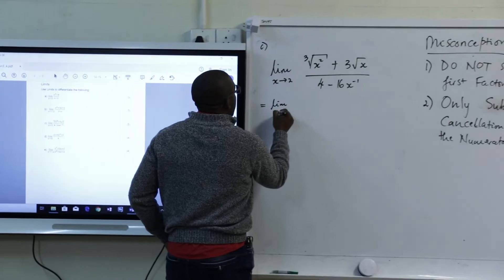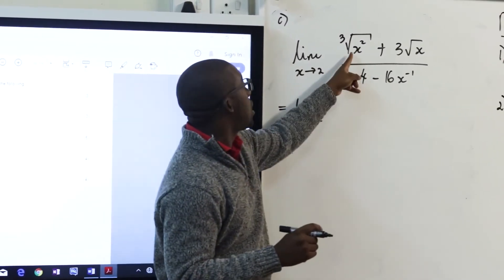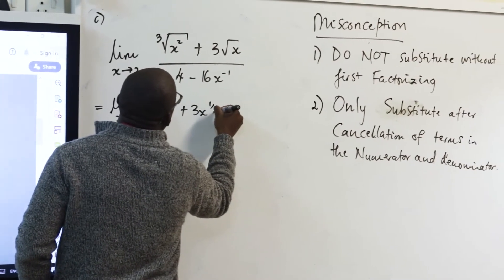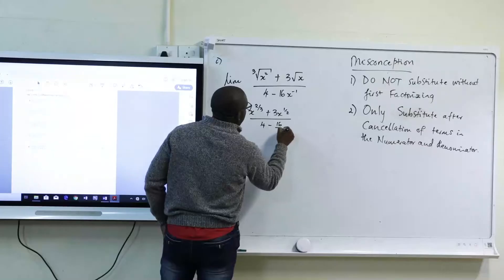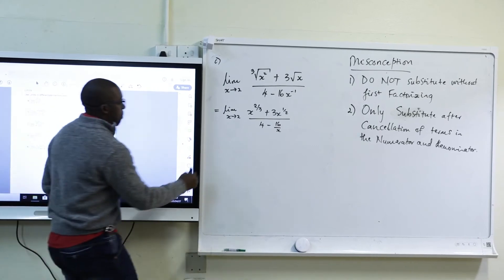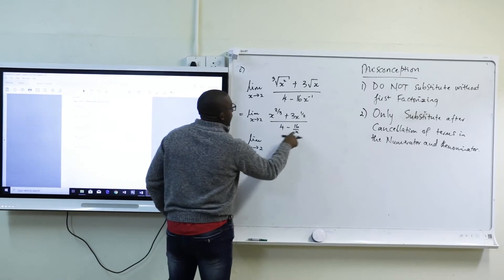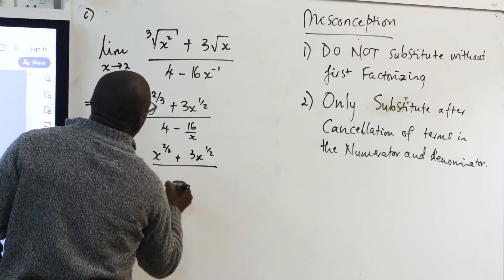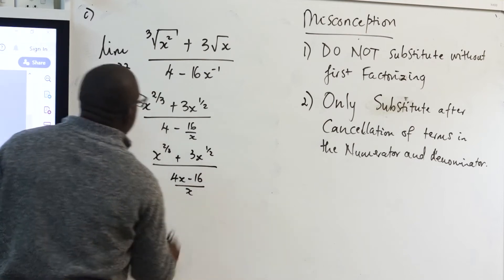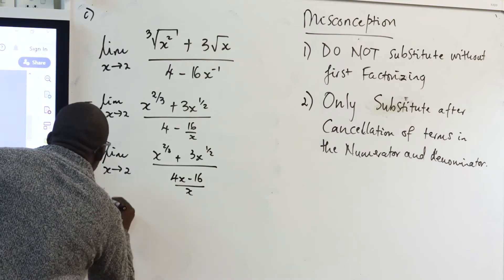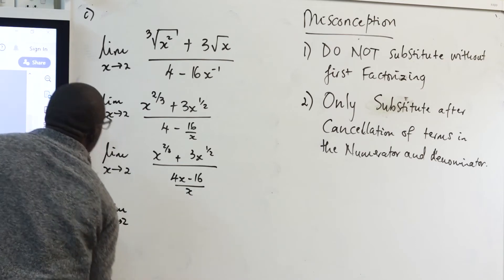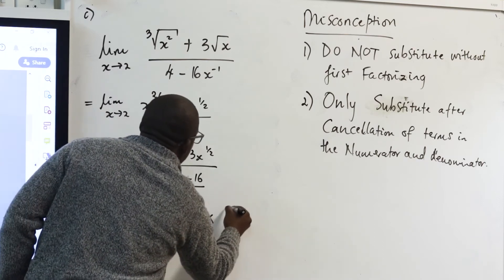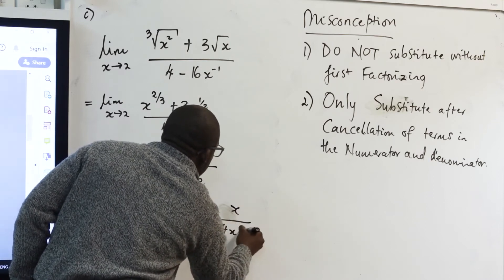First step: limit as x approaches 2 — use laws of exponents to change the roots into exponents. This becomes x to the 2 over 3, plus 3x to the half, all over 4 minus 16 over x. Next step: limit as x approaches 2 — find the LCD, giving x to the 2 over 3 plus 3x to the half, all over 4x minus 16 over x.